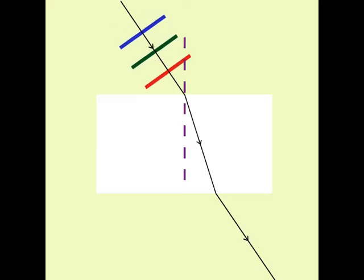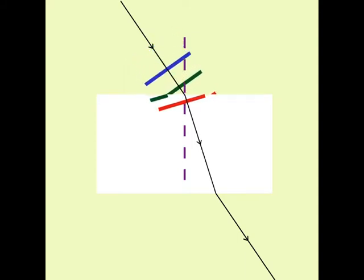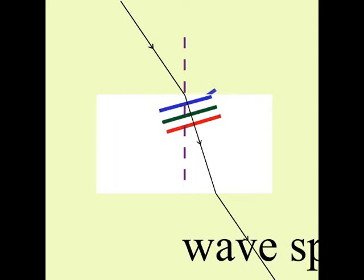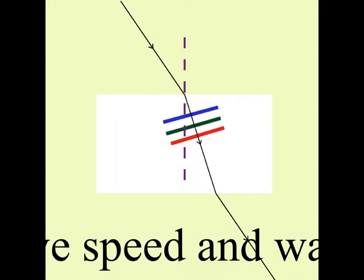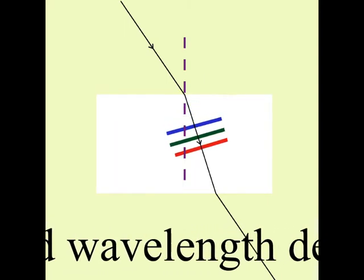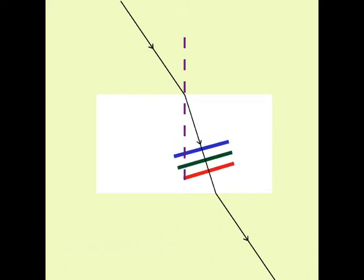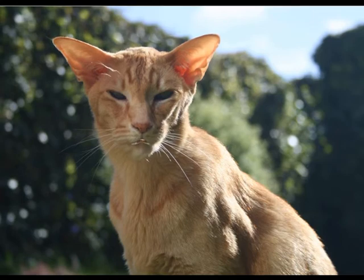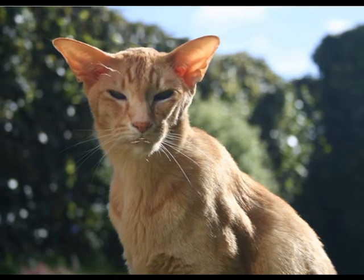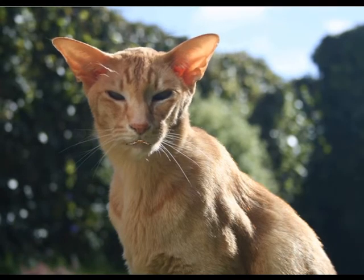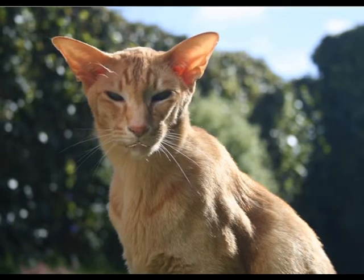For example, as a light wave enters glass, the wave refracts, or changes direction. At the boundary, the frequency of the wave stays the same, but speed decreases and the wavelength also decreases. This is different to reflection because in reflection, although the direction of the wave changes, the frequency, wavelength, and wave speed all remain constant.